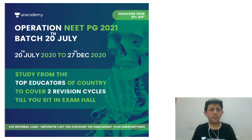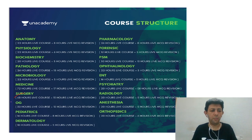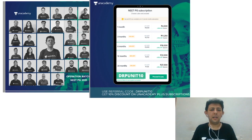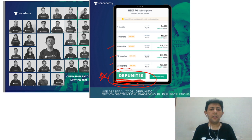The NEET PG batch has been launched from 20th July. Use code DRPUNEET10 to get 10% off. The batch covers theory and MCQ discussion for the entire OBGyn in October and November. Subscriptions of three months, six months, one year, and two years are available. Thank you and best of luck — I hope this lecture on investigations in infertility was informative.